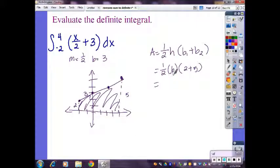That's one-half times 6, which is 3, times 2 plus 5, which is 7, which would be 21. So, the value of this definite integral is actually 21.